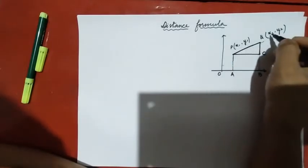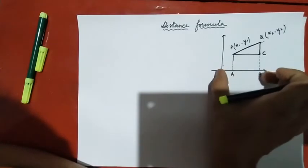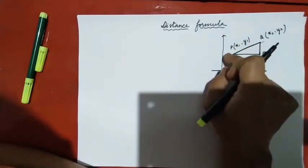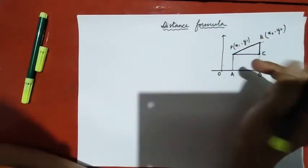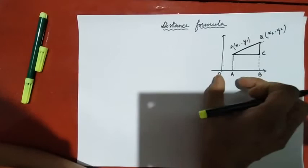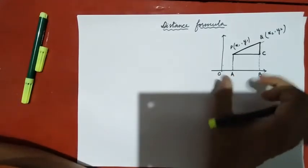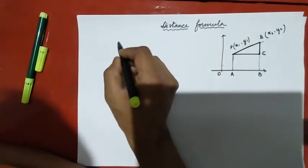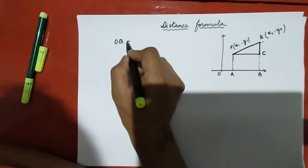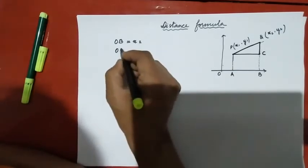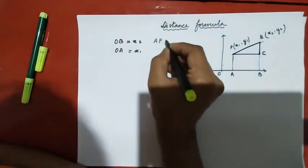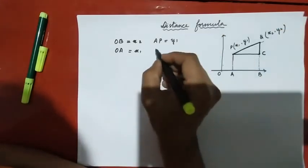O-A equals X1. O-B equals X2. P-C-Q: P, C, Q is A, B. Now, O-B equals X2, O-A equals X1. P equals Y1, Q equals Y2.